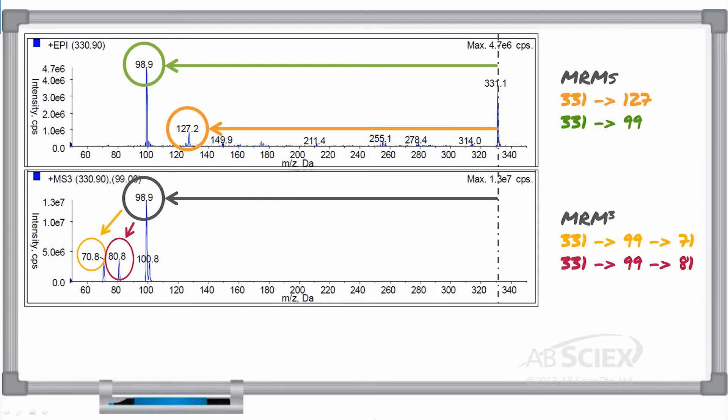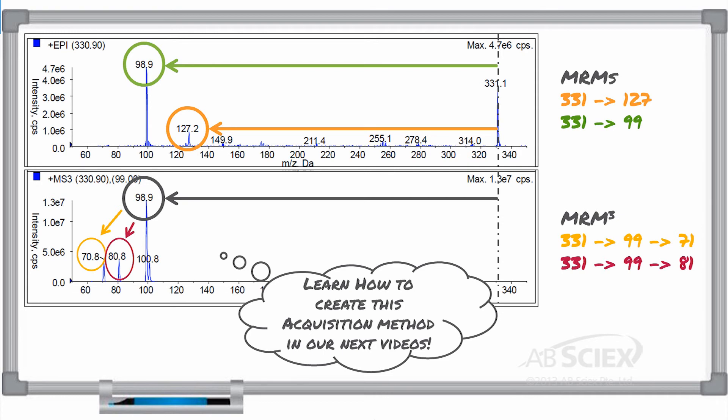When following this process for our compound malathion, our MRM cubed optimization showed two second-generation product ions created from our most intense product ion, ions 71 and 81. We now have unique MRM cubed transitions, which are highly selective to our compound of interest and can be monitored just like our MRMs can be monitored during our acquisition experiment.